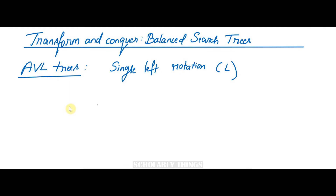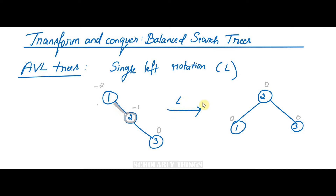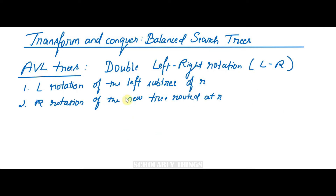Single left rotation (L rotation) involves rotating the edge connecting the root and its right child to the left side. After left rotation, node 2 becomes the root, node 1 goes to the left, and node 3 goes to the right — balance factors are all 0. Initially, before adding node 3, the balance factor of node 1 was -1, which was acceptable. But upon adding node 3, the balance factor of node 1 changed to -2, so after performing the left rotation, the AVL tree is now balanced.